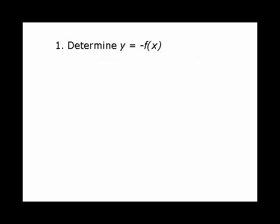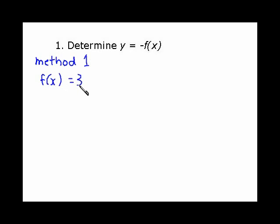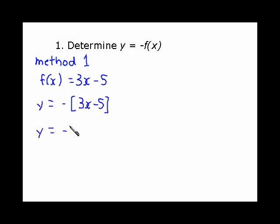To determine y = -f(x), here's Method 1. We start with the original equation f(x) = 3x - 5, and we express the new graph as y = -(3x - 5). Then you simplify by distributing the negative through, giving y = -3x + 5. Really all you did was multiply everything by negative 1.